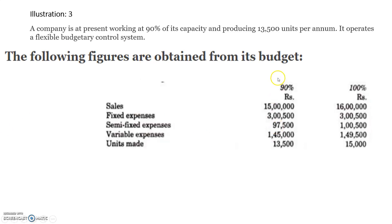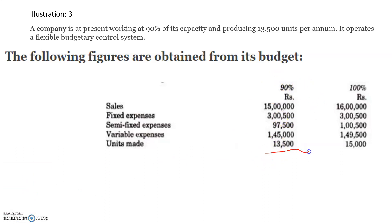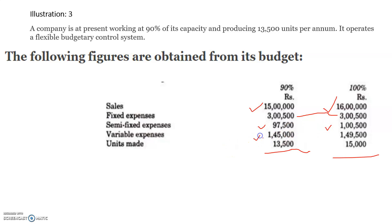The details are given at 90% capacity in the first two columns, and at 100% capacity in the next columns. Sales at 90% capacity are 15,00,000. If it operates at 100% capacity, sales will become 16,00,000. Fixed expenses are 3,50,000 in both situations. Semi-fixed expenses are 97,500 in the first case and 1,50,000 in the second case. Variable expenses are 1,45,000 and 1,49,500 respectively. Units produced are 13,500 at 90% and 15,000 at 100% capacity — producing 1,500 more units.